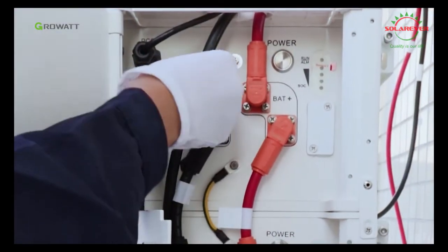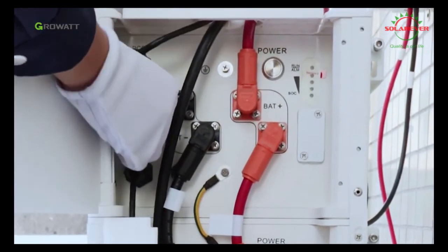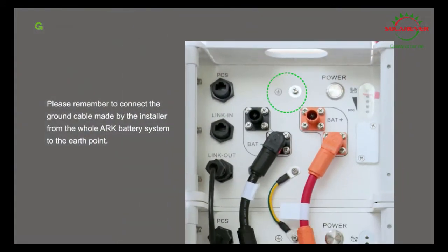Install the dust proof covers back to the floating terminals. Please remember to connect the ground cable made by the installer from the whole arc battery system to the earth point.